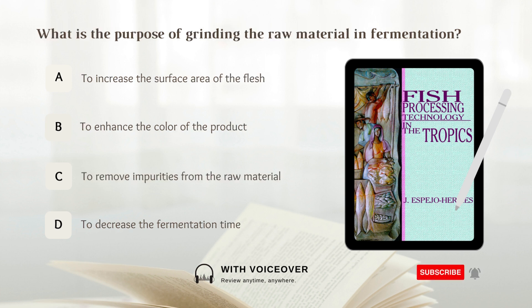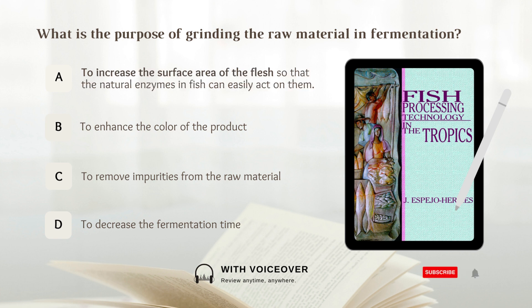What is the purpose of grinding the raw material in fermentation? A. To increase the surface area of the flesh. B. To enhance the color of the product. C. To remove impurities from the raw material. D. To decrease the fermentation time. Answer: A. To increase the surface area of the flesh so that the natural enzymes in fish can easily act on them.